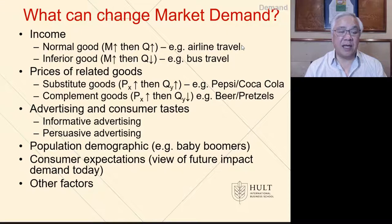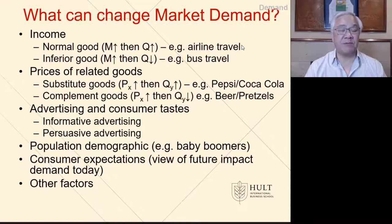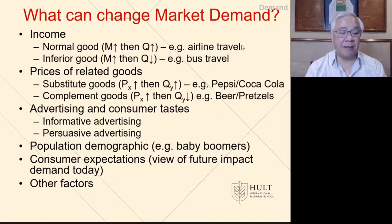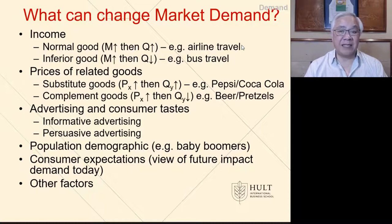Next are the prices of related goods. A substitute good is one where if the price of x goes up, the quantity of x goes down, but the quantity of y goes up. So if Pepsi raises its price, Pepsi's quantity would go down and Coca-Cola would go up — the price of x goes up and the quantity of y goes up as well. Next are complement goods, where if the price of x goes up and the quantity of y goes down, they're complementary goods — in other words, they're bought together. So in a bar, if the price of beer goes up, people buy less beer and they will buy less pretzels. So the quantity of pretzels will drop, as will the quantity of beer consumed.